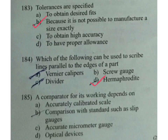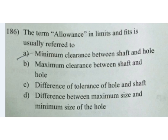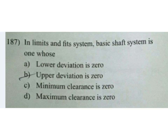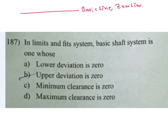The term allowance in limits and fits usually refers to: A minimum clearance between shaft and hole, B maximum clearance between shaft and hole, C difference of tolerance of hole and shaft, D the difference between maximum size and minimum size of the hole. Minimum clearance between shaft and hole is the answer. In limits and fits system — basic shaft system — the upper deviation is zero. B is the answer.